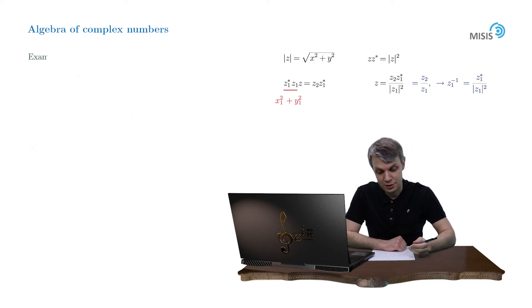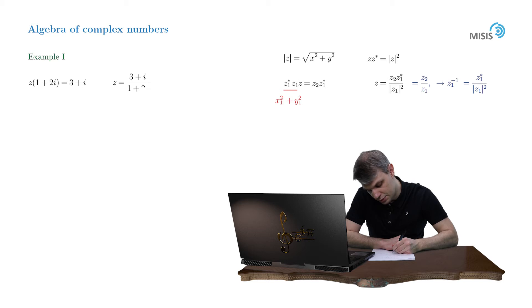Let's consider some quick example. Suppose you want to solve an equation z times 1 plus 2i is equal to 3 plus i. Then formally speaking z equals 3 plus i divided by 1 plus 2i. Now we need to get rid of the complex number in the denominator of the right hand side. So what you do? You multiply the numerator and the denominator by its complex conjugate.